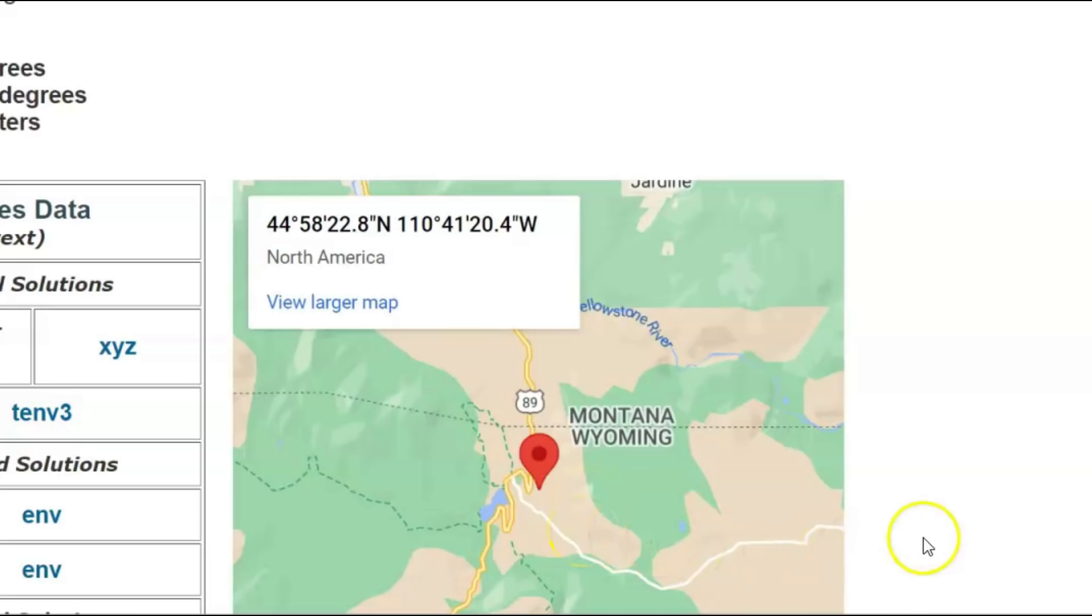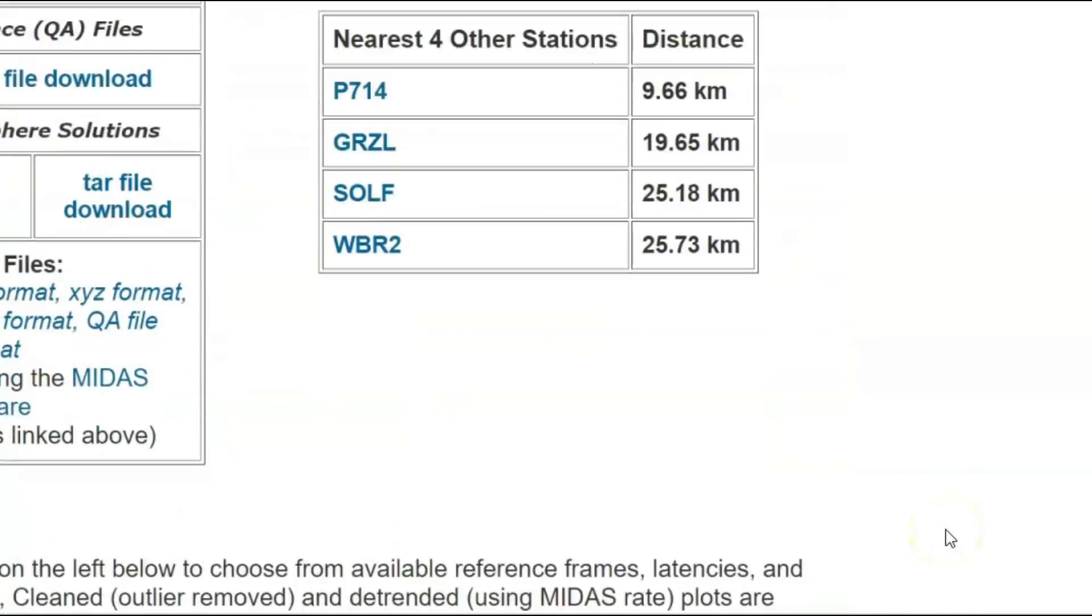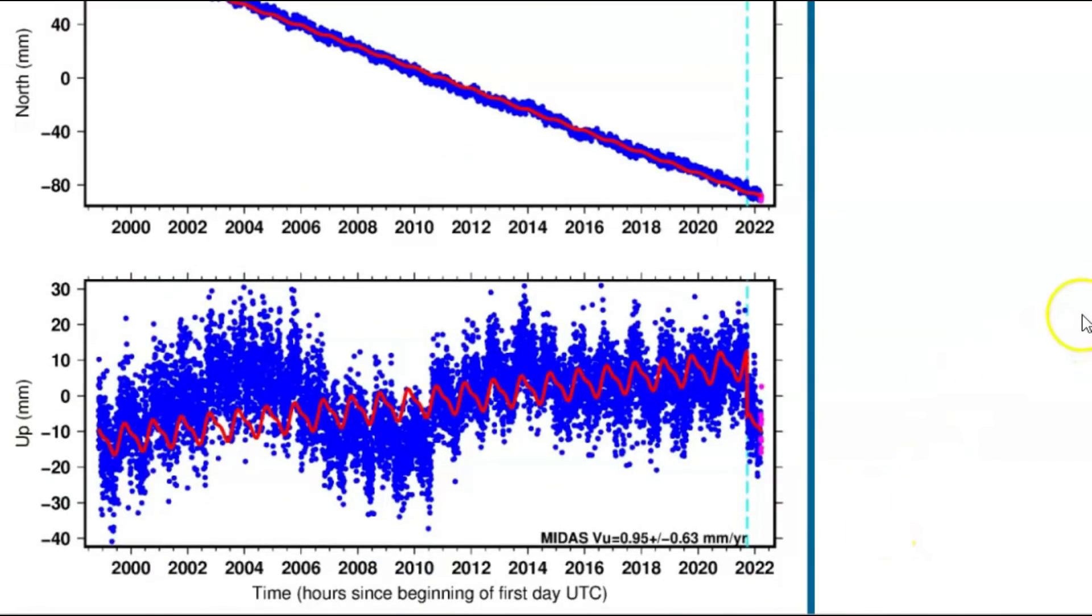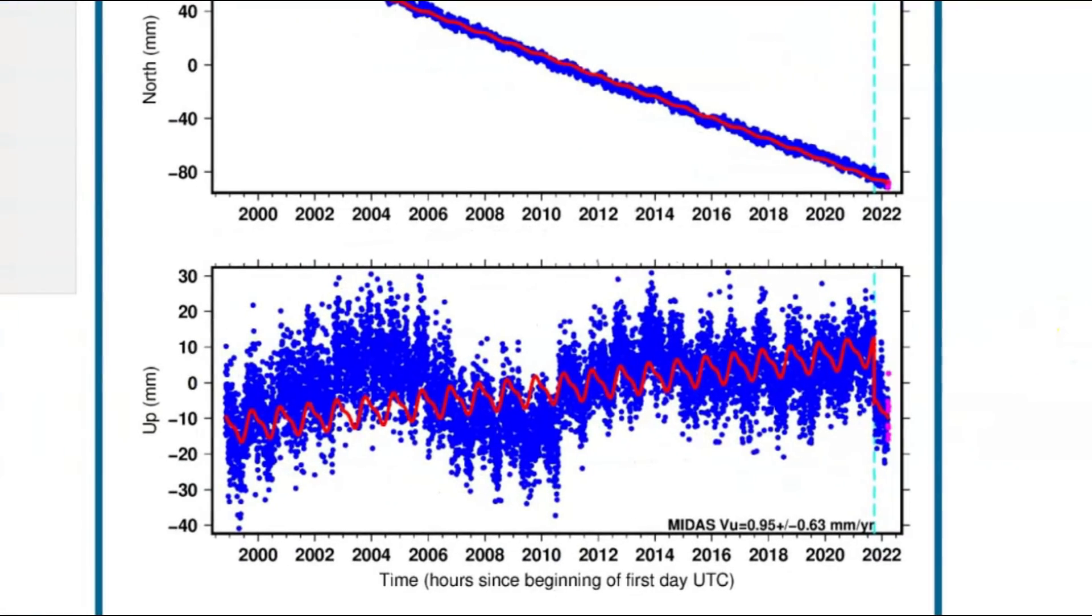All right. So here we have the border of Montana and Wyoming. This is near Gardner, which is also by Mammoth Vault. And we know that the hotspot is slowly moving northeast. So you might find this interesting. Let's come down here and yeah. Look at the uplift that's been going on going back to probably 1999.